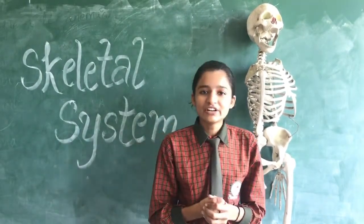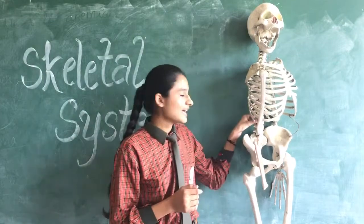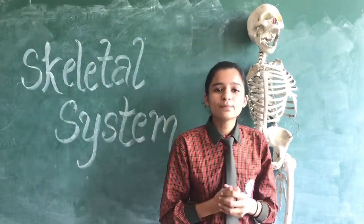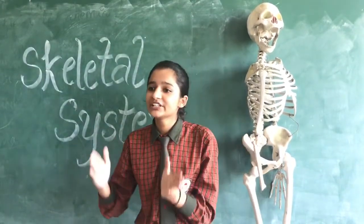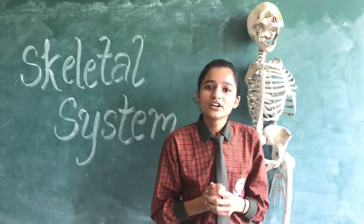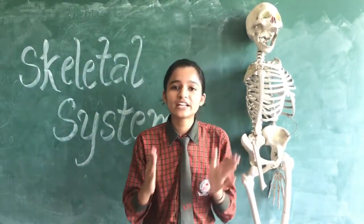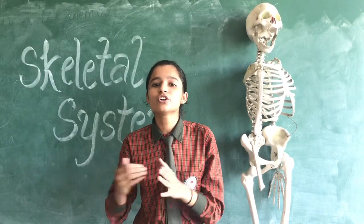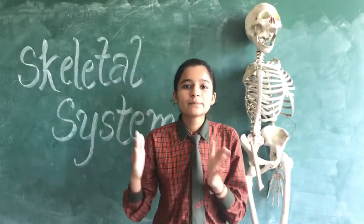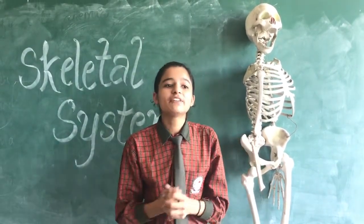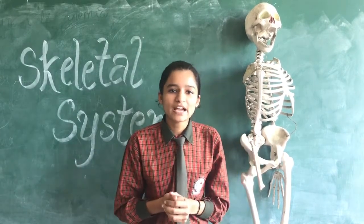Now I will tell you about the backbone or spine. As you can see, the backbone is made up of 33 small bones in our body. It protects the spinal cord of our body. It also helps to keep us straight, and we can sit straight with the help of this backbone.